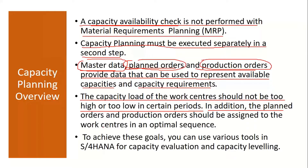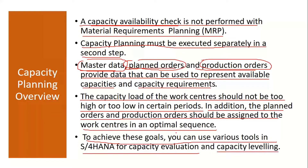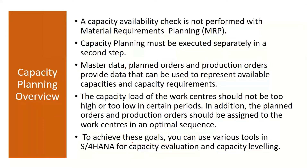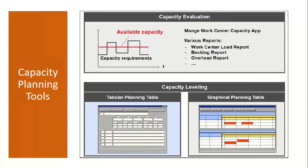Planned orders and production orders should be assigned to work centers in an optimal sequence. To achieve these goals, you can use various tools in S/4 HANA for capacity evaluation and capacity leveling. Basically, we have two functions: capacity evaluation and capacity leveling.